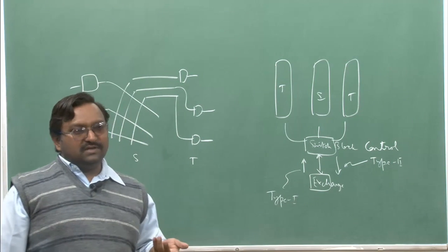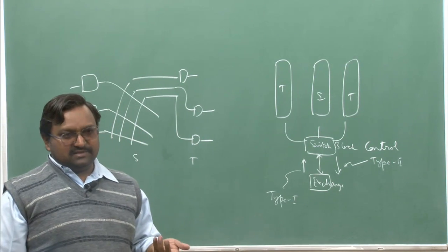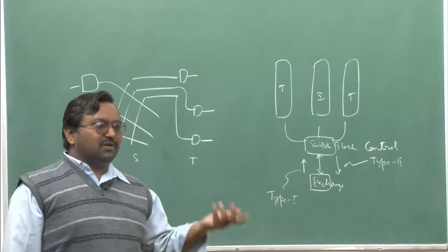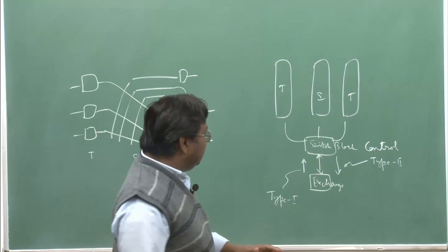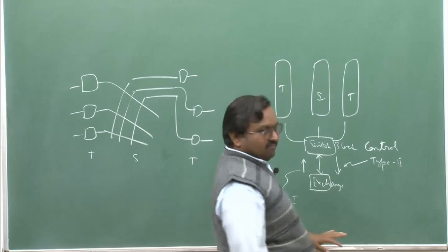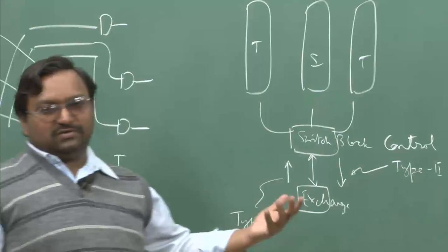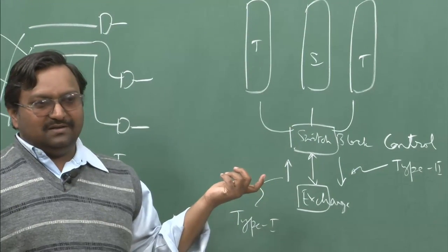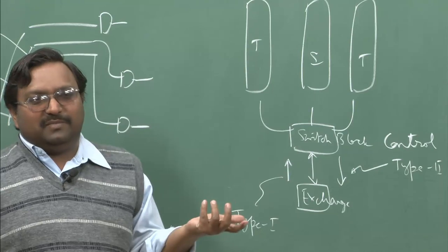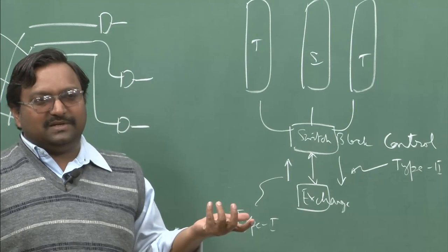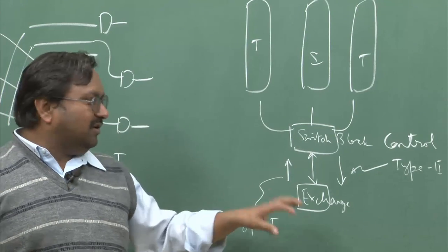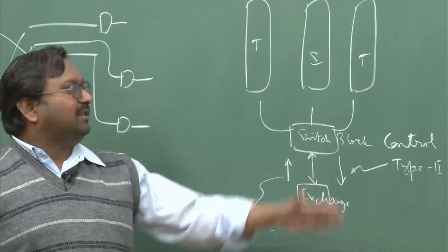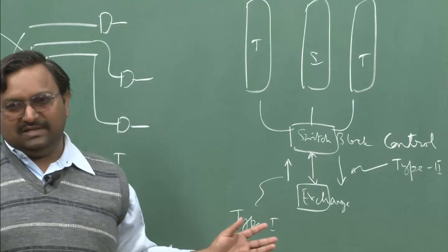There will always be a sequence number given to a type 1 message. A type 2 message will have its own sequence number, but will always refer to the sequence number of the type 1 message in response to which that particular type 2 message has been sent. There can be multiple type 2 messages sent back in response to a single type 1 message.